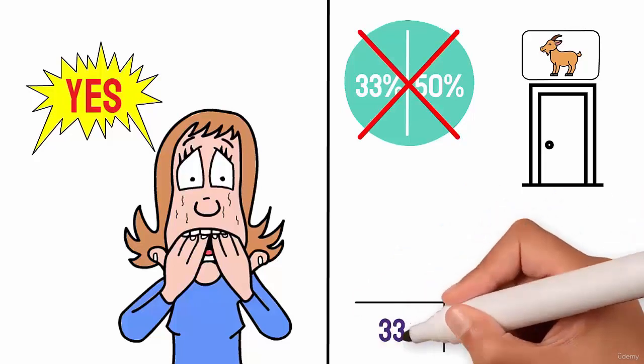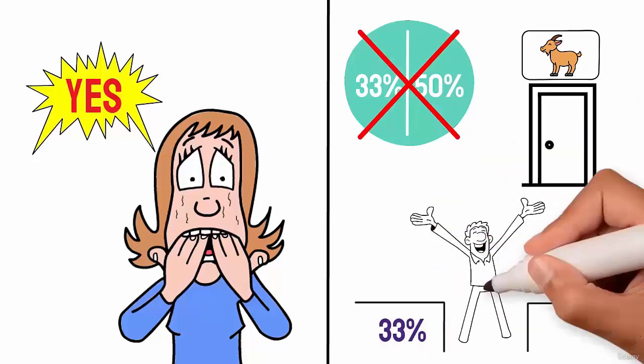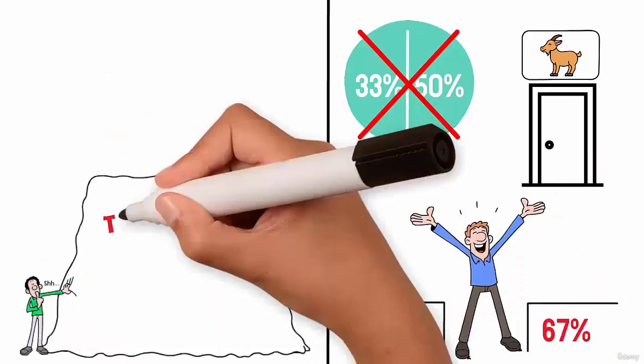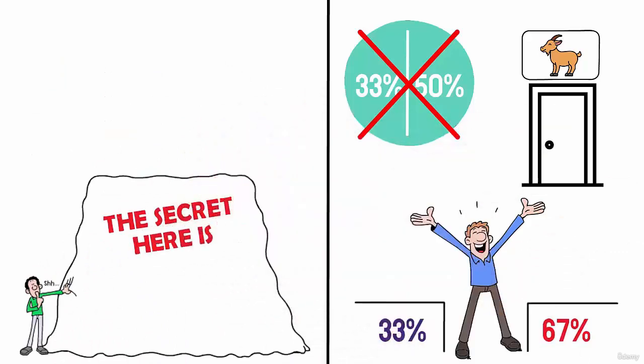You only have 33% probability of winning while switching gives you 67%. The secret here is the curated choice. Because the presenter knows what's inside the doors and he picks one that has the goat.